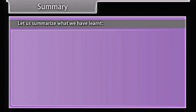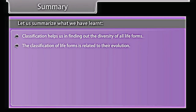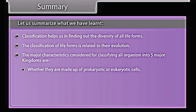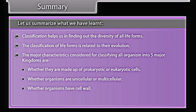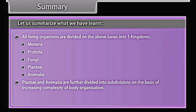In summary: Classification helps us in finding out the diversity of all life forms. The classification of life forms is related to their evolution. The major characteristics considered for classifying all organisms into five major kingdoms are: whether they are made up of prokaryotic or eukaryotic cells; whether organisms are unicellular or multicellular; whether organisms have cell wall; and whether organisms prepare their own food. All living organisms are divided on this basis into five kingdoms: Monera, Protista, Fungi, Plantae, and Animalia. Plantae and Animalia are further divided on the basis of increasing complexity of body organization.